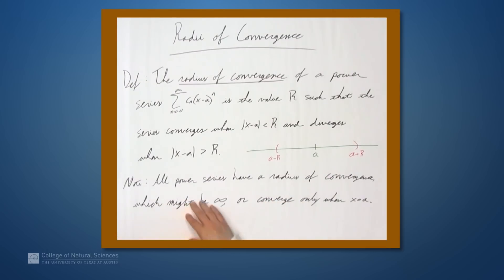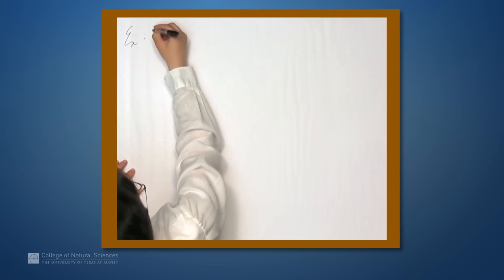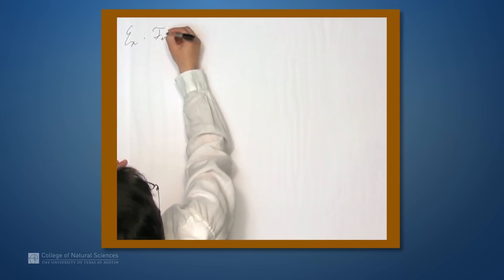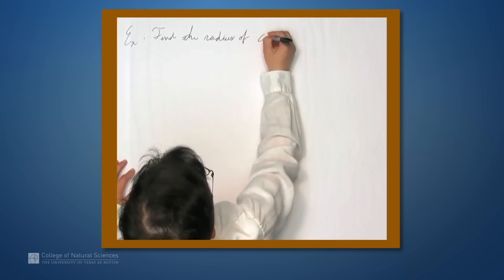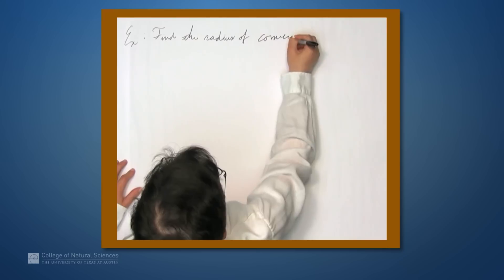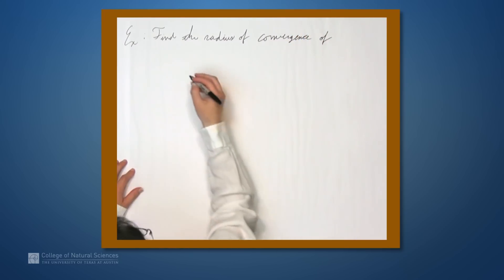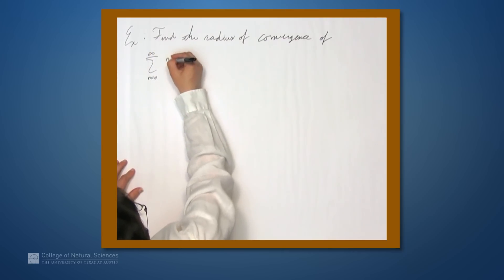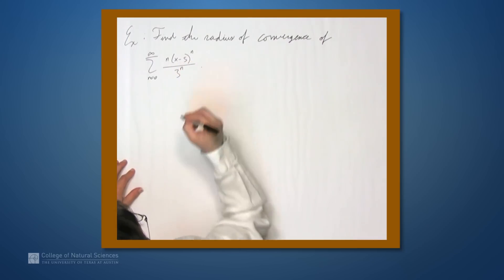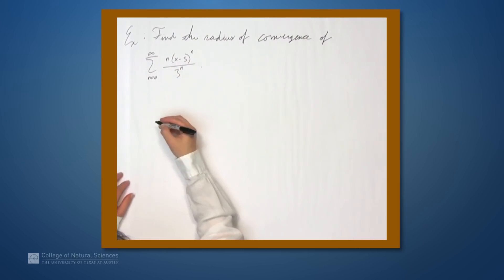Let's take a look at an example. Let's find the radius of convergence of the sum from n equals 0 to infinity of n(x-5)^n over 3^n. As we so often do with power series, we're going to use the ratio test.